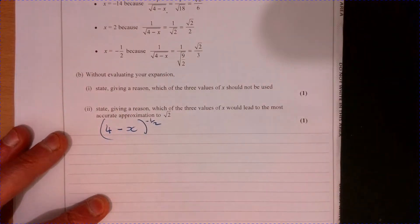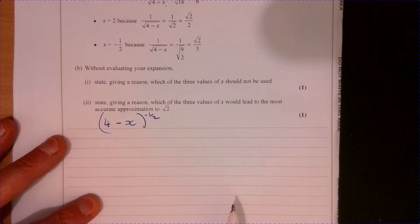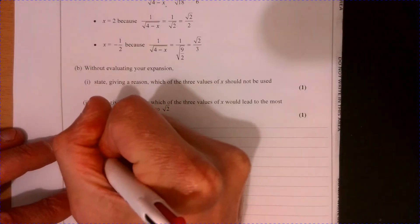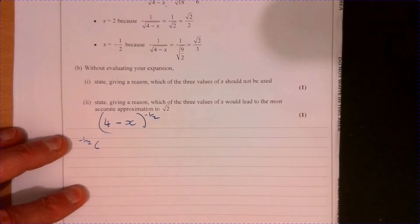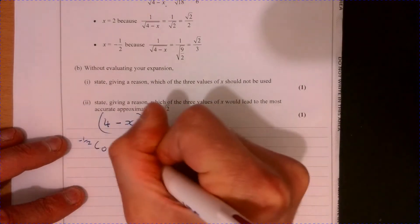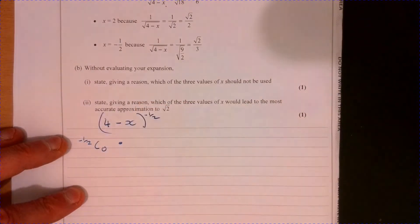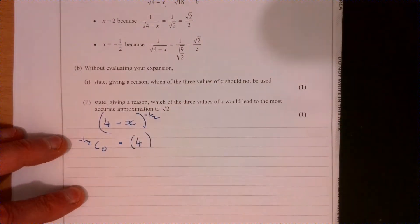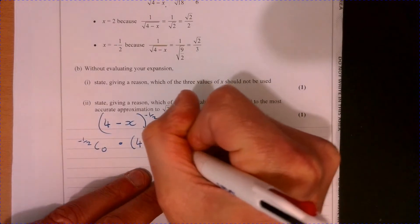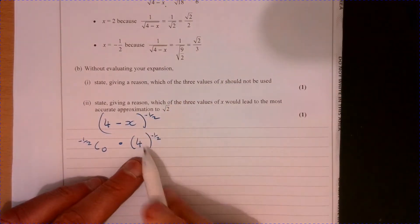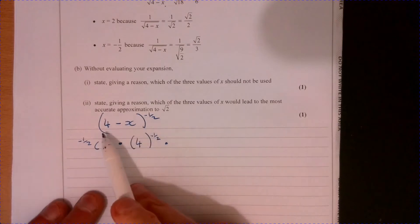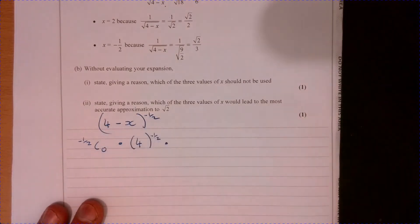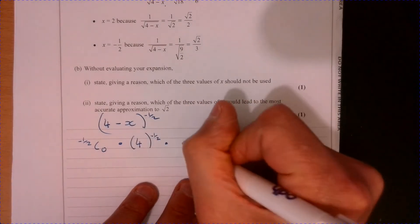Now I'm going to think about the expansion. I only need the first three terms. So this is what I tend to do. I know we can't do minus a half C zero, but we'll think about what that is in just a moment. All I'm doing is thinking about how to expand these normally — exactly the same thing as if I had something like four plus x to the power of three.